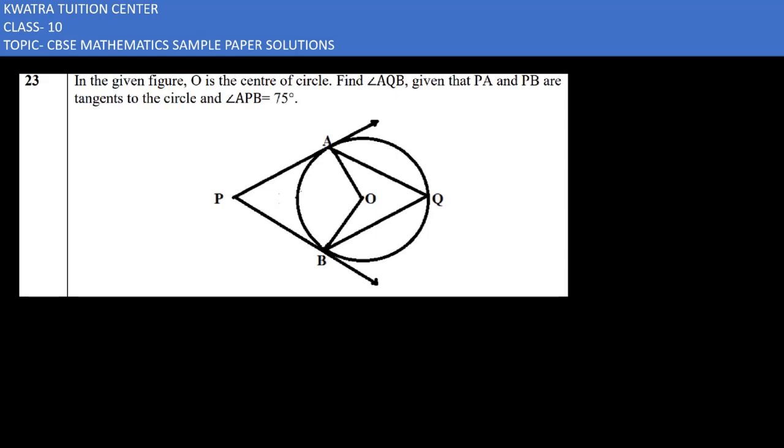Let's start with question number 23. Here it is given that we have a figure and O is the center of the circle. PA and PB are tangents to the circle.